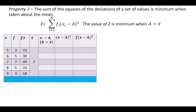So the value of deviation, that is x minus a, will be: minus 2, minus 1, 0, 1, and 2. The squares of the deviation will be 4, 1, 0, 1, and 4. The product of frequency and squares of deviation will be 12, 5, 0, 5, and 12. When we take the sum of squares of the deviation, it will be 34.